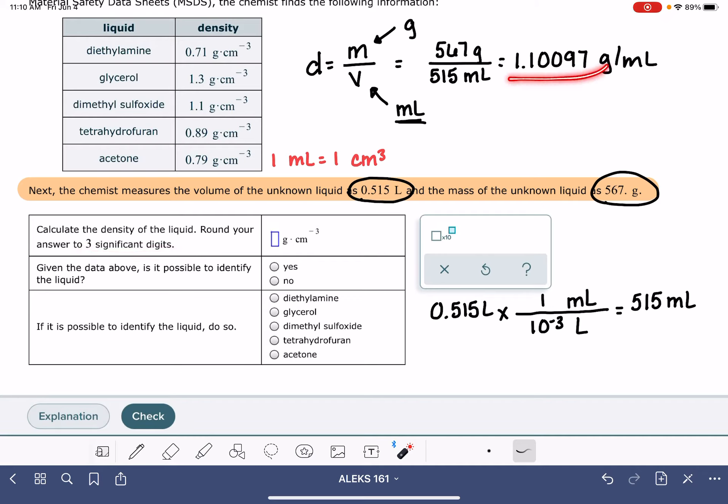To three significant figures, I've got a lot of extra sig figs up here, so this is going to be 1.10. Next question: given the data above, so it's referring to this data in the table, is it possible to identify the liquid? We're taking the density that we calculated and comparing it to the densities in this data table. And it looks like there's one density in the data table that matches perfectly with what we've calculated.